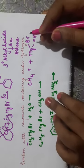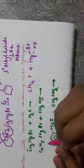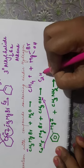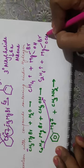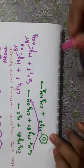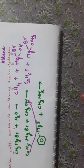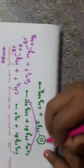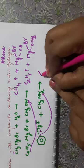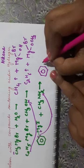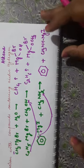Ethyl magnesium bromide on treatment with methanol: there is an acidic hydrogen on the oxygen, so it abstracts this hydrogen and forms C₂H₆, and the remaining part is MgBr–OCH₃. Phenyl magnesium iodide with CH₃NH₂: hydrogen is acidic because it is attached to nitrogen. The negative part abstracts the proton, forming benzene and CH₃–NH–MgI.